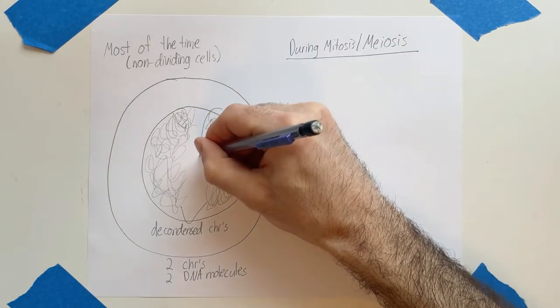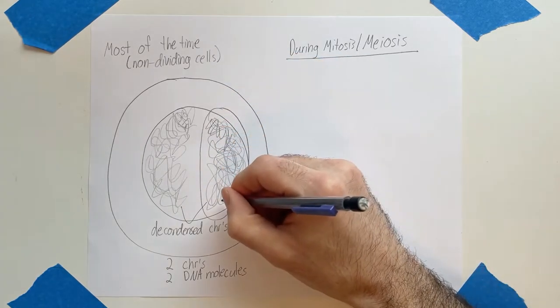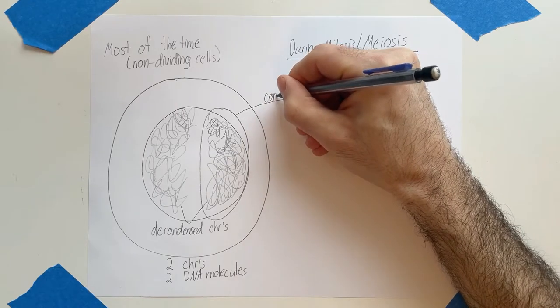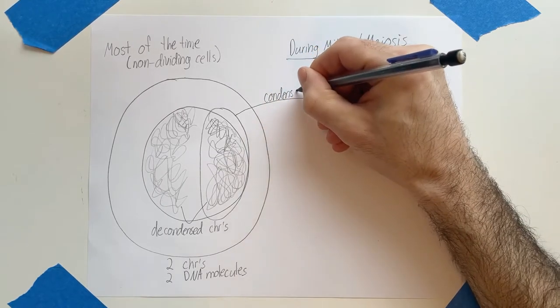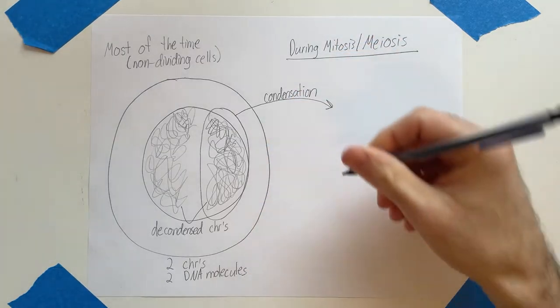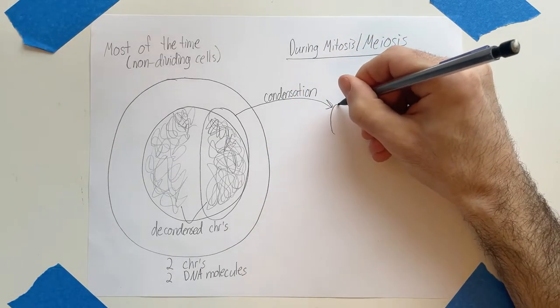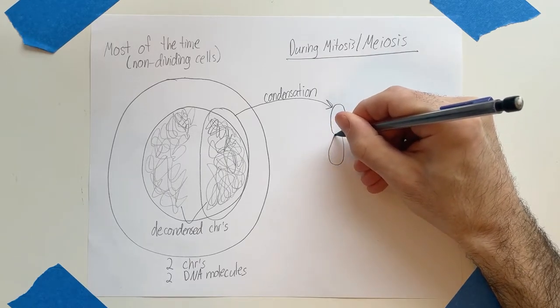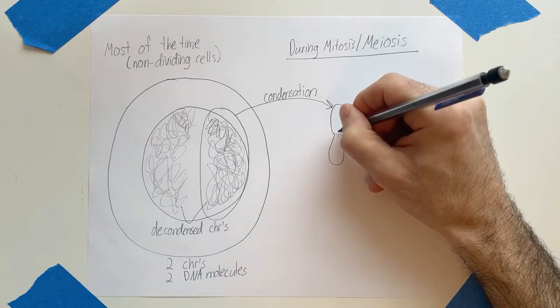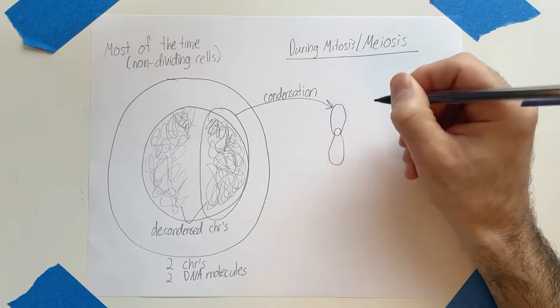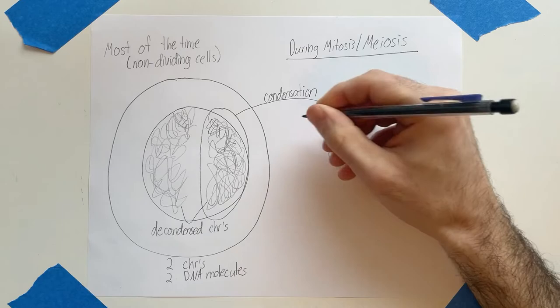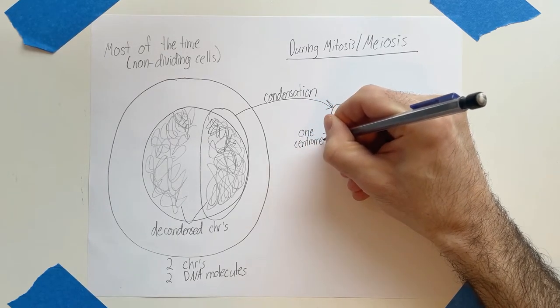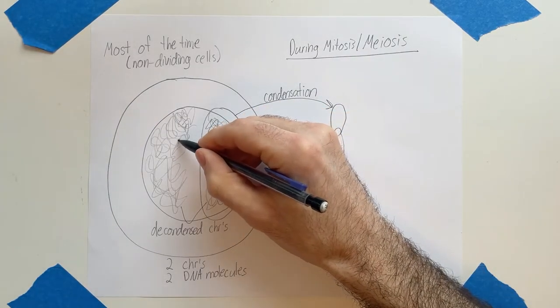Okay. Now, early on in cell division, these decondensed chromosomes undergo condensation. Resulting in this type of structure, a condensed chromosome. And these are the chromosomes that you're probably accustomed to seeing. And this chromosome, each chromosome at this point has a centromere. And this is one centromere. Okay. And we can do it for this chromosome too.